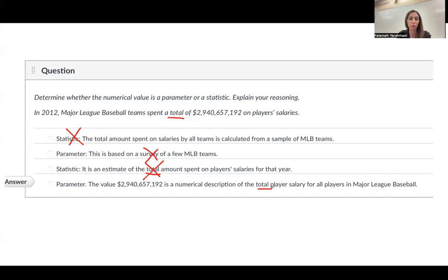So, you need to identify the keywords here. Statistic, subsection, survey, and parameter is about total, everybody, everything.